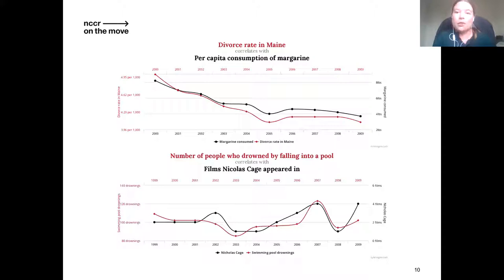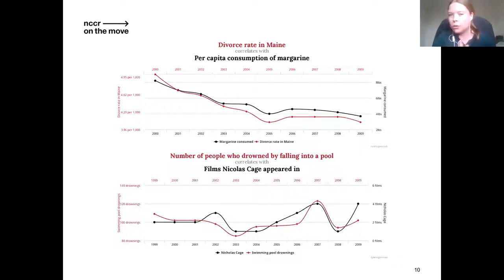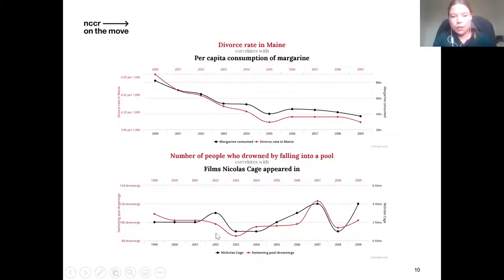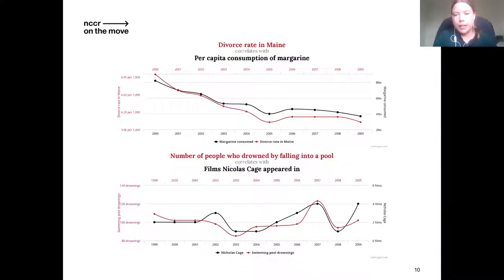These graphs show some silly examples of how correlation and causation are not the same thing. The top graph shows divorce rates in Maine and per capita consumption of margarine moving very similarly — but of course that doesn't mean margarine consumption causes divorce. The lower graph shows the number of people who drown by falling in a pool and the number of Nicolas Cage movies — again, closely correlated, but it's far-fetched to say Nicolas Cage causes people to drown. Similarly, there is a clear correlation between wages and ethnicity, but that does not mean it is necessarily a causal relationship.